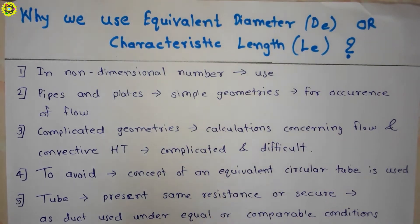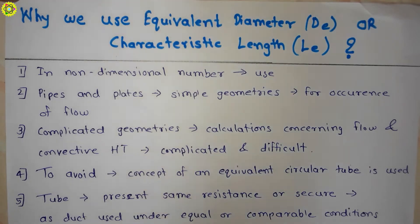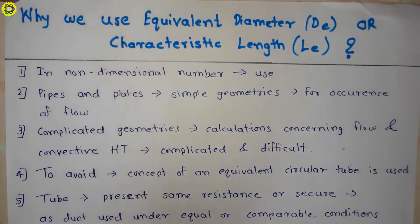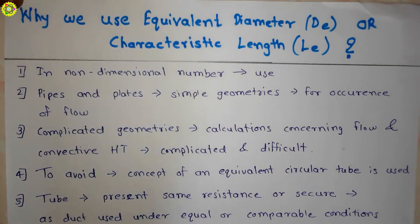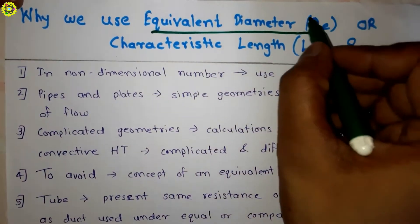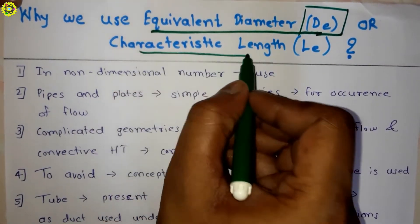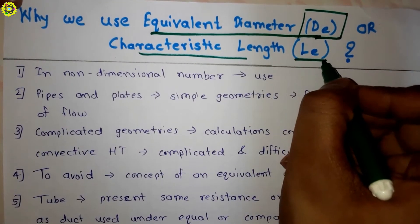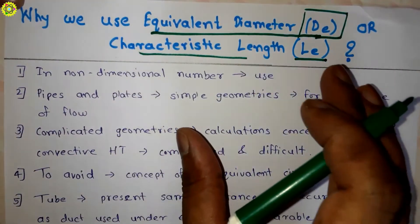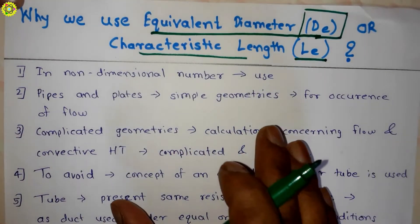Hi students, welcome. In this video we will understand the reason for using equivalent diameter or characteristic length. After that we will see some of the formulas of equivalent diameter or characteristic length for few geometries. Equivalent diameter is denoted by de and characteristic length is denoted by le.